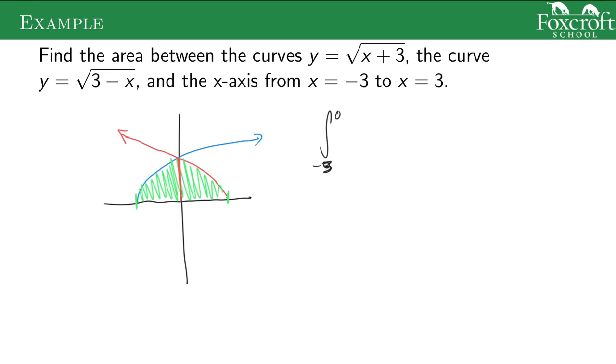So that's negative 3 to 0 of the blue curve, which was the square root of x plus 3. Then we could add to that the area under the red curve from 0 to 3 of the second function. So we could do this because the area under the blue curve is just there, the area under the red curve is there.